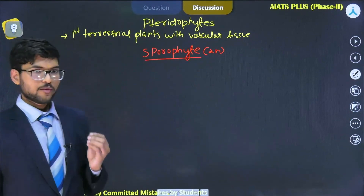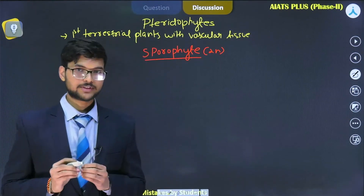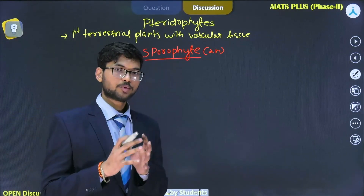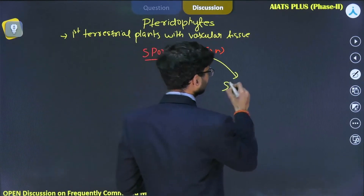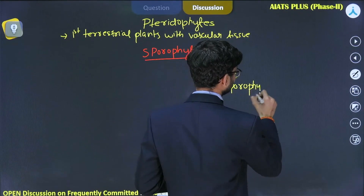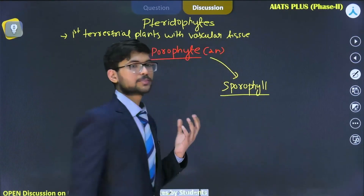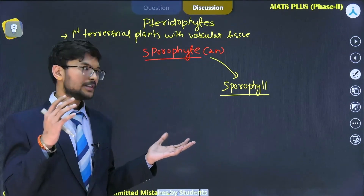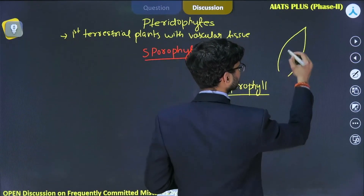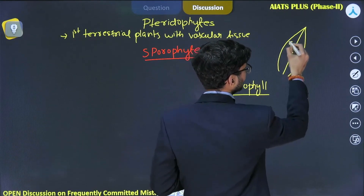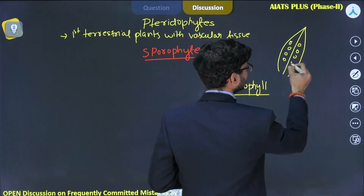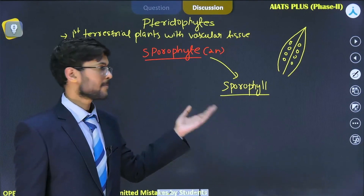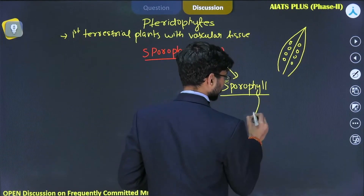The sporophyte body consists of true root, stem, and leaf structures, and it also carries sporangia. The sporangia consist of spores, and are present either on the leaflets or the leaves. Sometimes in pterophytes there are dot-like structures on the abaxial region called sori, which contain spores.